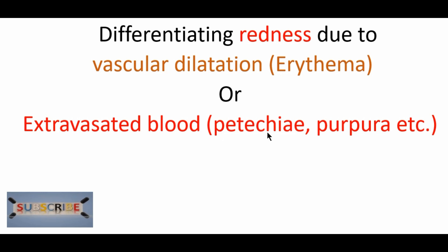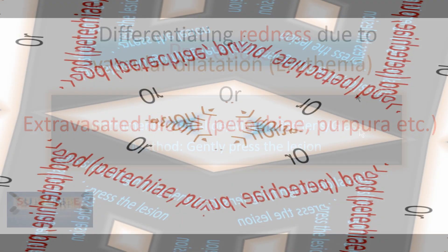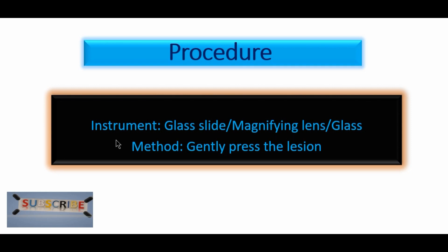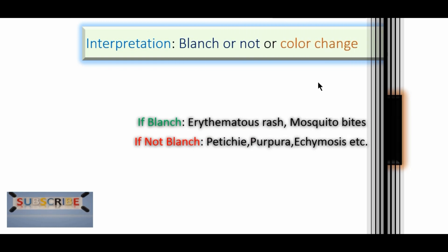Such as petechiae, purpura, etc. Coming to the procedure, a simple instrument is needed — a glass slide, a magnifying lens, or a normal glass we use to drink water. The method is also very simple: only gently press the lesion.